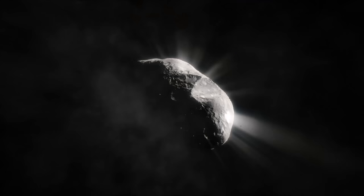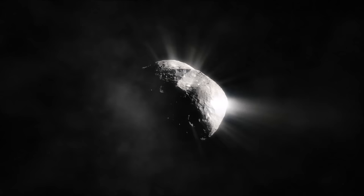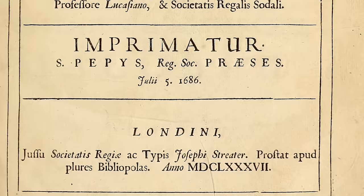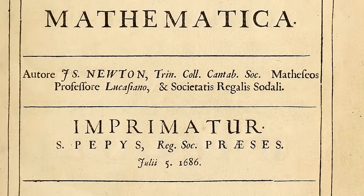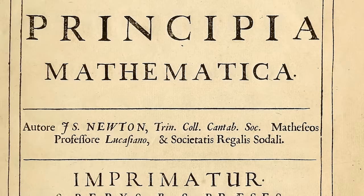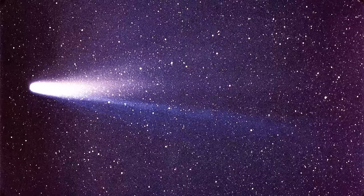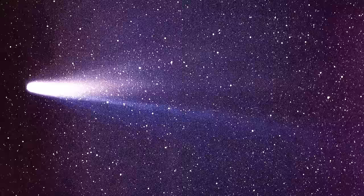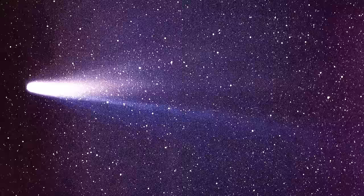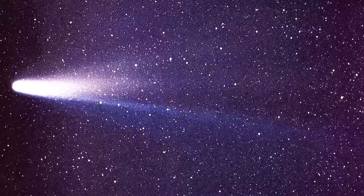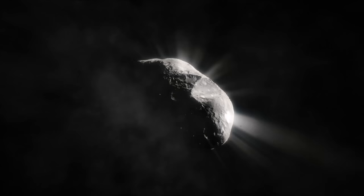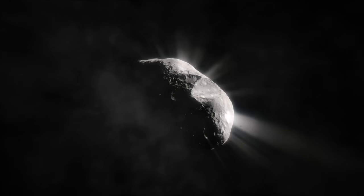Sir Edmund Halley, a contemporary and friend of Newton, took a step further and applied Newton's laws to explain the orbits of comets. His collaboration with Newton resulted in the publication of Philosophiae Naturalis Principia Mathematica, a monumental work that laid the foundation for classical mechanics and celestial mechanics. Halley, fascinated by the regular appearance of comets, made a bold prediction. He used Newton's laws to calculate the orbits of a comet that had appeared in 1682 and predicted its return in 1758. The comet duly appeared as Halley had foretold, posthumously validating his calculations.